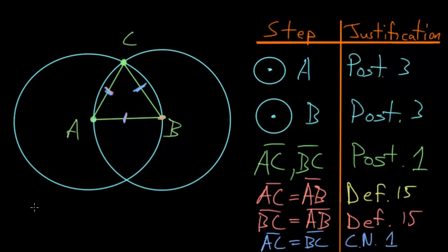So in conclusion, we can say therefore, this is the symbol for therefore, triangle ABC is equilateral.